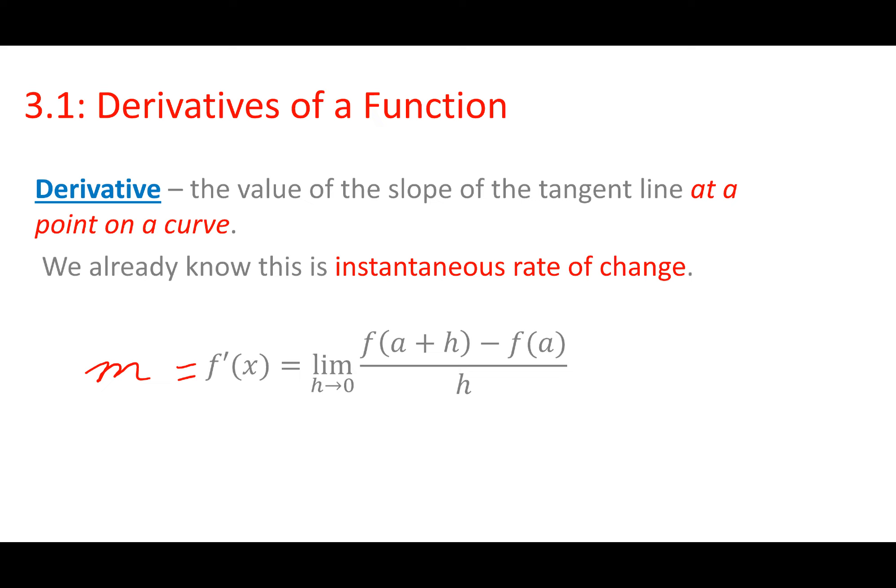We know slope is change in Y over change in X, and this big formula looks nasty, but all it is is change in Y. That A plus H — I already broke that down in your notes — it's actually on that curve. We're bringing point Q down, and so H approaches zero as my points P and Q get closer to each other. So my change in Y is F of that, and as H approaches zero, my change in H is becoming zero.